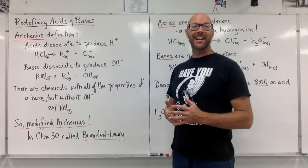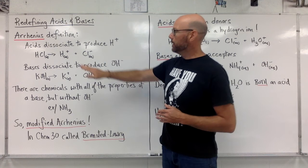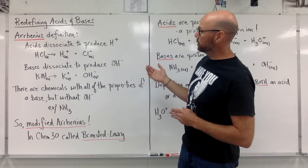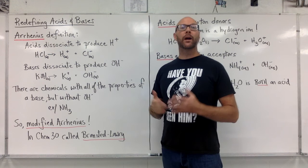That definition says that acids are chemicals that dissociate to produce hydrogen ions. Here we have HCl dissociating to H plus and Cl minus. It's an acid because it dissociated to produce hydrogen ions. Bases dissociate to produce hydroxide ions. Here's potassium hydroxide dissociating into potassium ions and hydroxide ions.